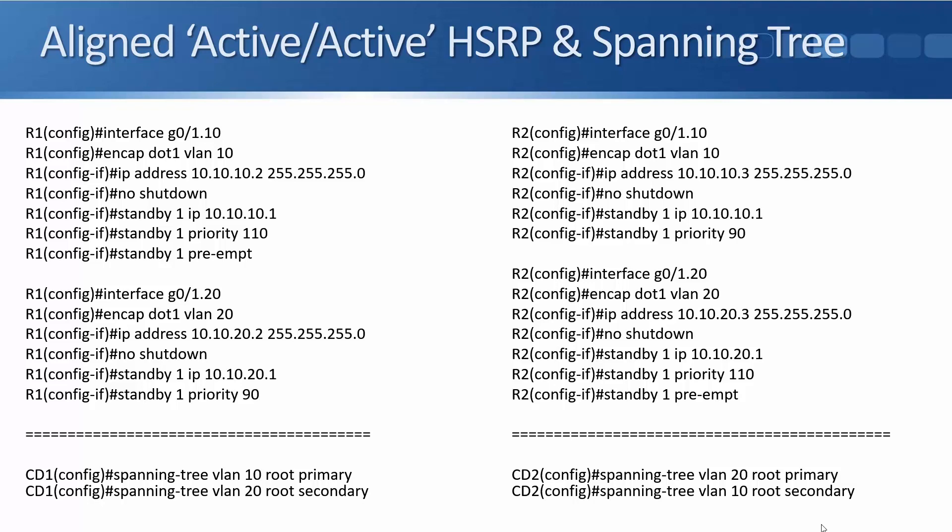That's my layer three config. I also want to configure spanning tree — I want this traffic to go through CD2. So on the CD2 switch, I say spanning tree VLAN 20 root primary. And for failover on CD1, I've got spanning tree VLAN 20 root secondary. So that's how you do your configuration where you line up HSRP and spanning tree so that you get load balancing and automatic failover as well.